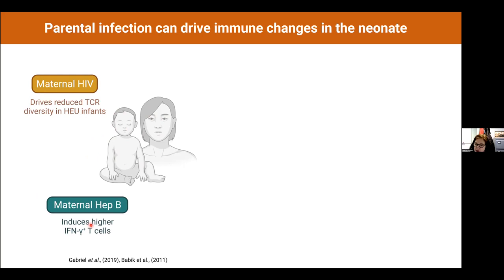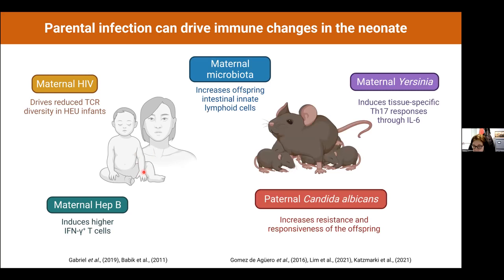Maternal hepatitis B infection drives much higher levels of interferon gamma-producing T cells in the neonate — even though I just showed that interferon gamma is not normally produced well at birth. Mouse studies show the mother's microbiome affects infant innate lymphoid cells, infection with Leishmania in pregnant mice induces different tissue responses in offspring, and paternal candida infection increases offspring resistance to candida — even when only the father was infected.